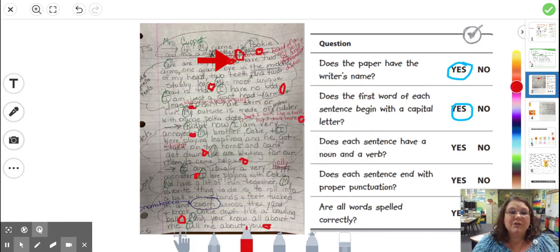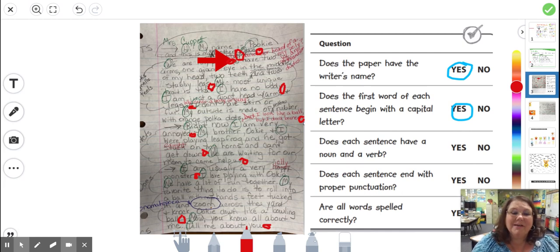When you finish, you should have something that looks like this. Does your paper look like this? Where you have ended every sentence with a punctuation. Did you find that you were missing some? I hope so. This is where we catch that. So let's look over here. Does each sentence have a noun and a verb? Yes, we just checked that. Does each sentence end with proper punctuation? Yes, we just checked that. Now, speaking of punctuation,